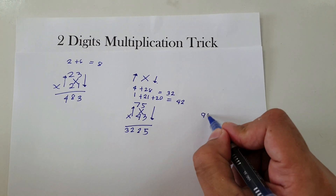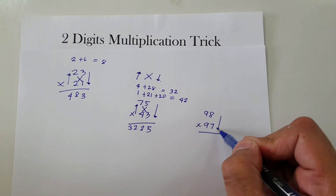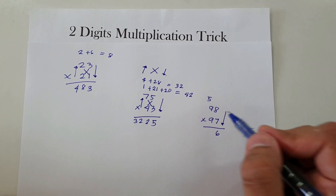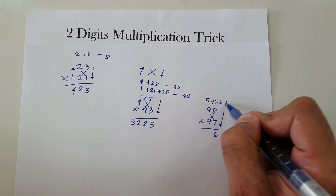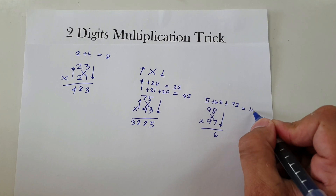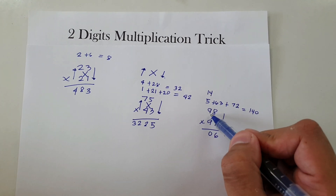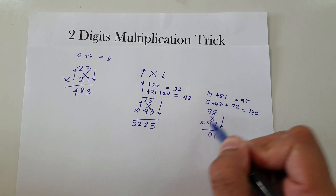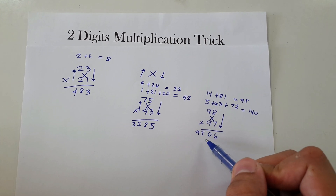Last example: 98 times 97. Down: 8 times 7 is 56 — write 6, carry 5. Cross: 9 times 7 is 63, and 9 times 8 is 72; add the carry: 5 plus 63 plus 72 is 140 — write 0, carry 14. Up: 9 times 9 is 81, plus the carried 14 is 95. Therefore 98 times 97 is 9,506.